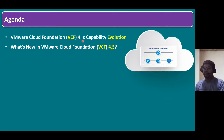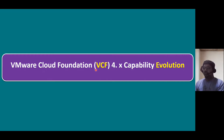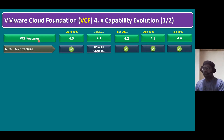Within the 4 series, we have versions 4.0, 4.1, 4.2, 4.3, and 4.4. Version 4.0 was released in April 2020, 4.1 in October 2020, 4.2 in February 2021, 4.3 in August 2021, and 4.4 in February 2022.